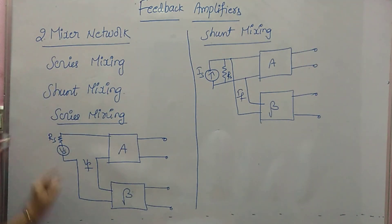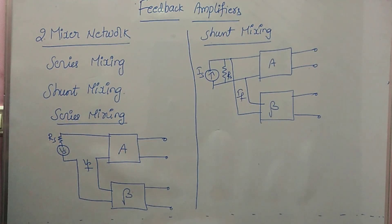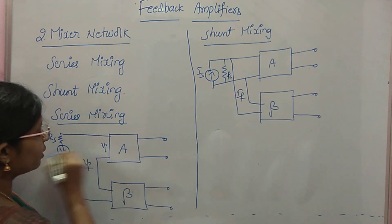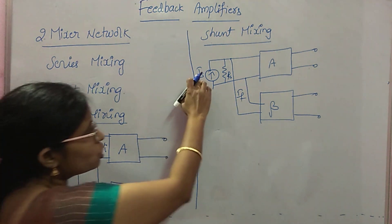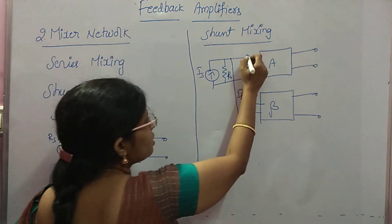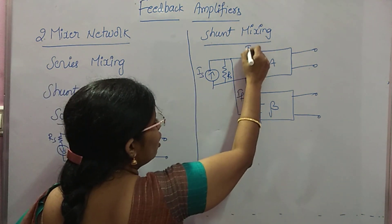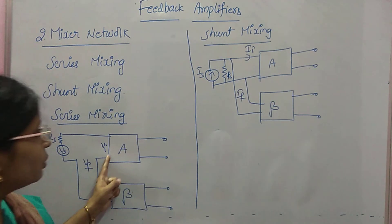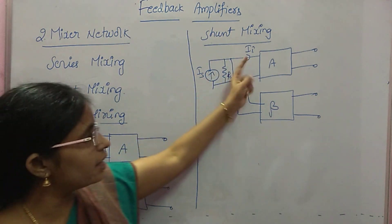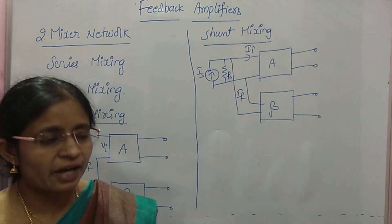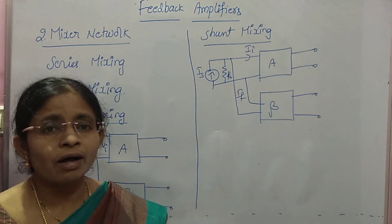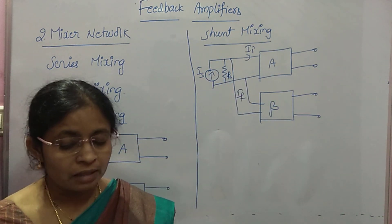In series mixing, the feedback voltage is mixed in series with the source voltage, and in shunt mixing, feedback current is mixed in shunt with the current source. With these two mixings you are going to get your VI — the input voltage — or II — the input current. So this is about your mixing network.